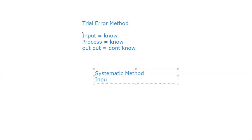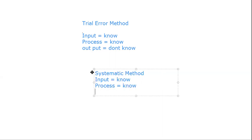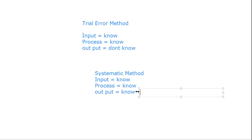The second method is the systematic method. In the systematic method, they know the input, they know the process, and they also know what the output would be. The difference between the systematic method and trial-and-error method is that in trial-and-error you don't know the output, but in the systematic method you do.